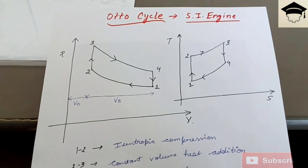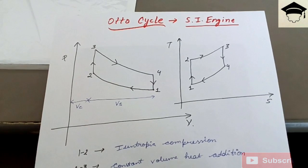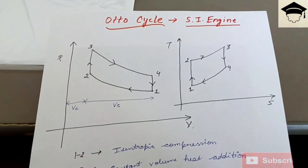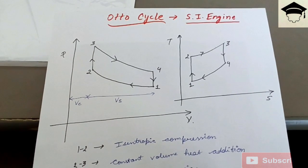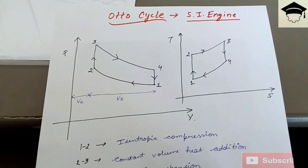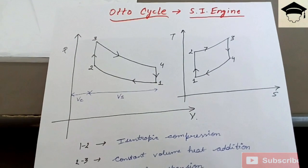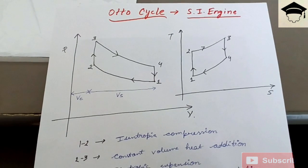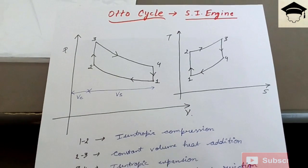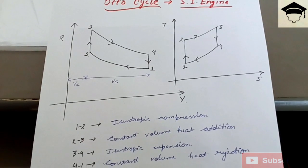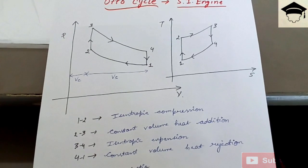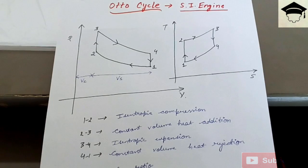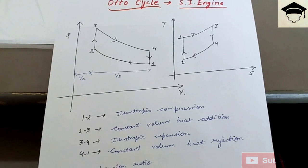The PV diagram and TS diagram are as shown below. From 1 to 2 it is isentropic compression. From 2 to 3 it is constant volume heat addition. 3 to 4 it is isentropic expansion. 4 to 1 it is constant volume heat rejection.